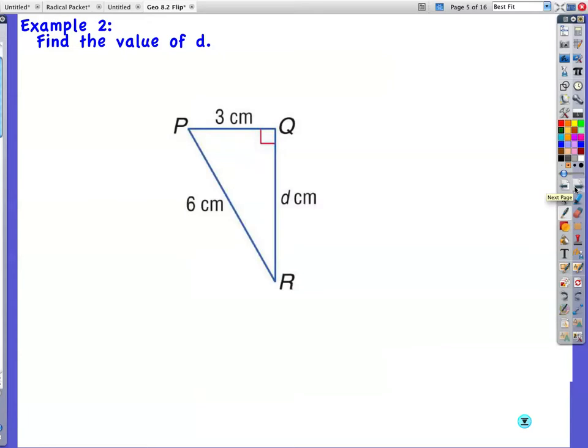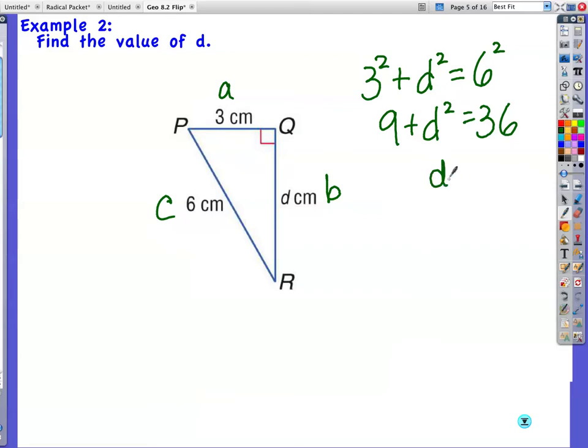Example 2. Find the value of d. This time d is a leg. So I can have a and b or the other way around, a here and b here. And my hypotenuse is c. So 3 squared plus I'll put d squared equals the hypotenuse. I think I know the value of c is 6. So there's my a squared plus b squared equals c squared. 9 plus d squared equals 36. Subtract 9 from both sides. I get 27, not 25.